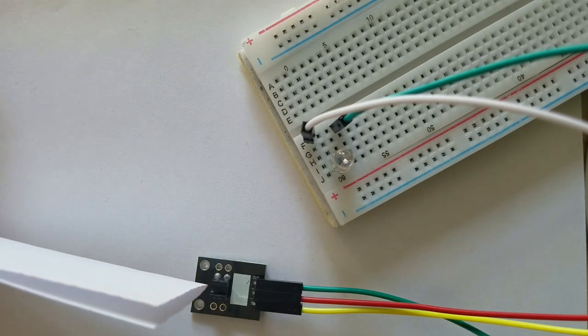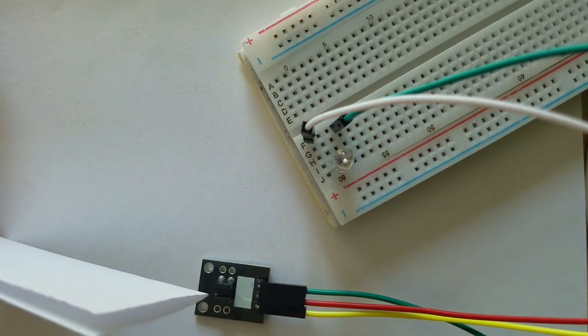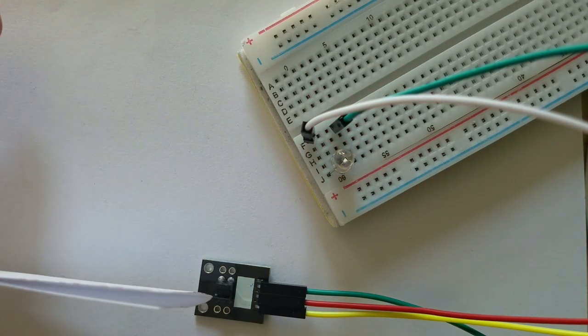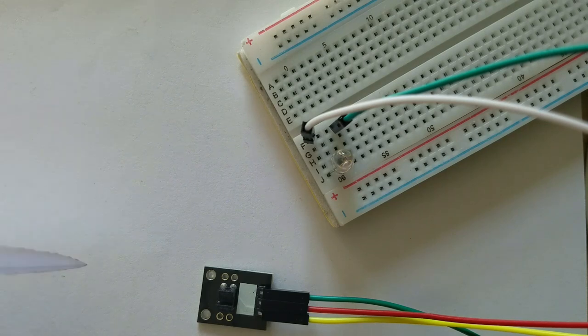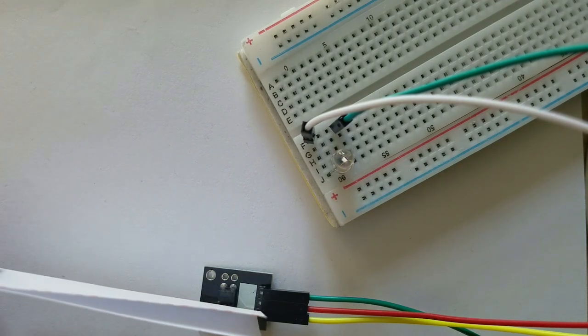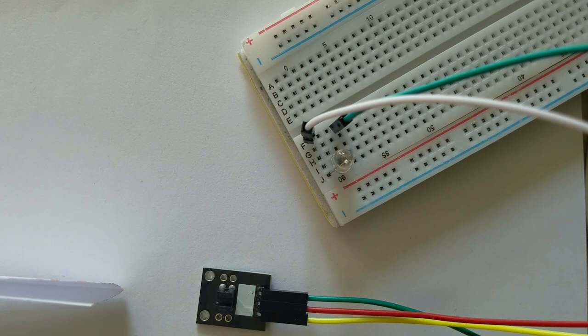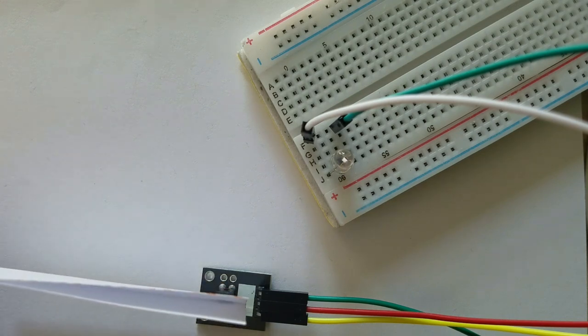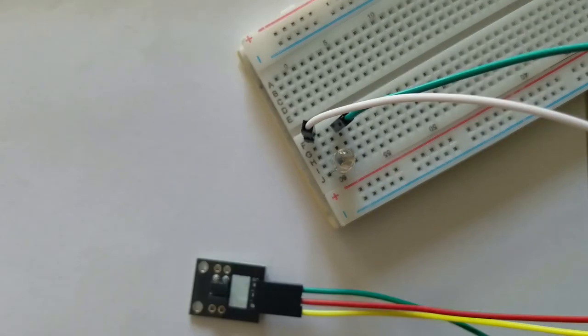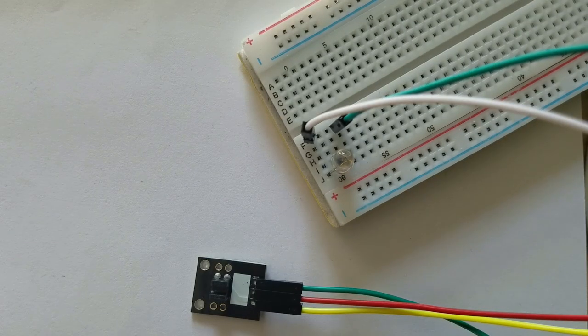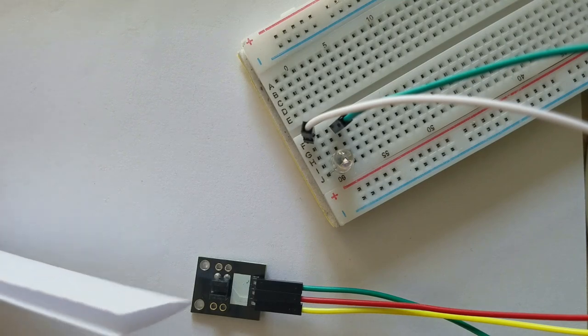An object that passes through the space between the photo transistor and the infrared diode will interrupt the infrared light, and the signal that this module gives will change from low to high. This device is very fast and ideal for counting and sensitivity.